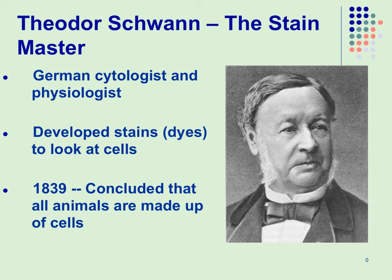Then another scientist, Theodore Schwann, basically made two contributions to what we know about cells. He was a cytologist, which means he studied cells, and he primarily studied animal cells. As a result of his extensive studies he concluded that all animals are made up of cells. He is also known as the 'stain master' because he came up with different stains to stain different structures so you could see them more clearly under the microscope. An easy way to remember Schwann for animals: if you look at his name, think of a swan — Schwann studied animal cells.